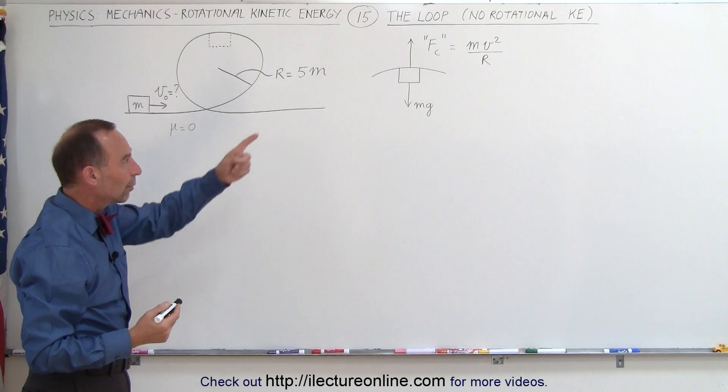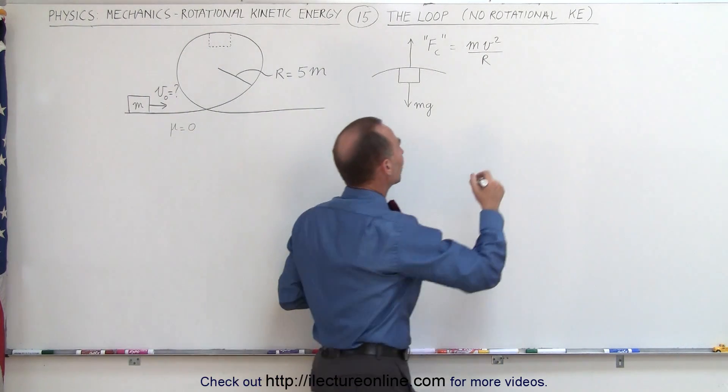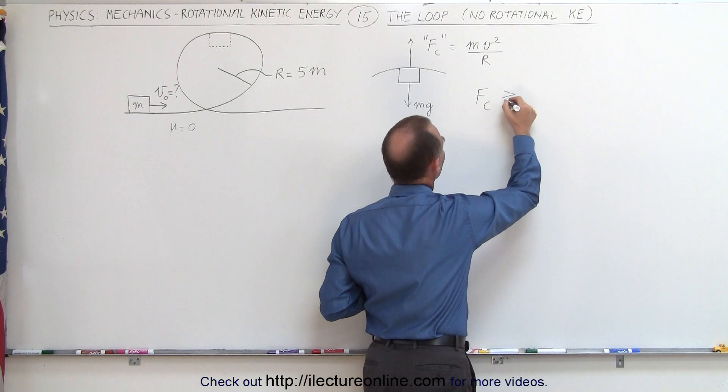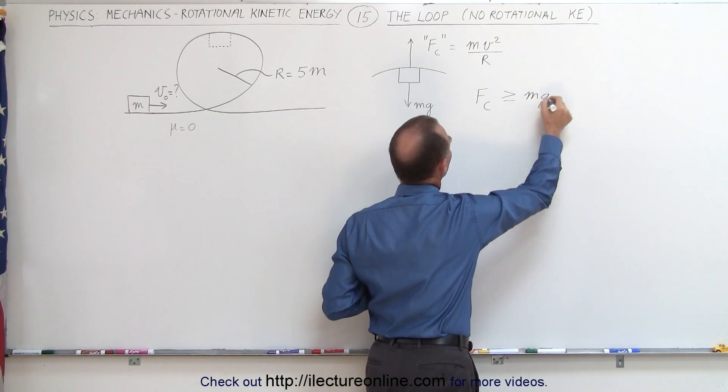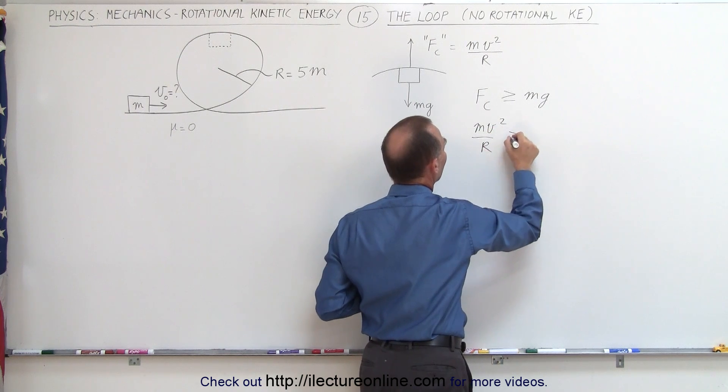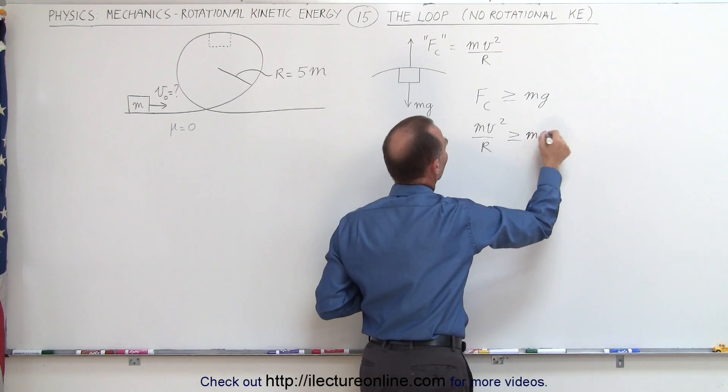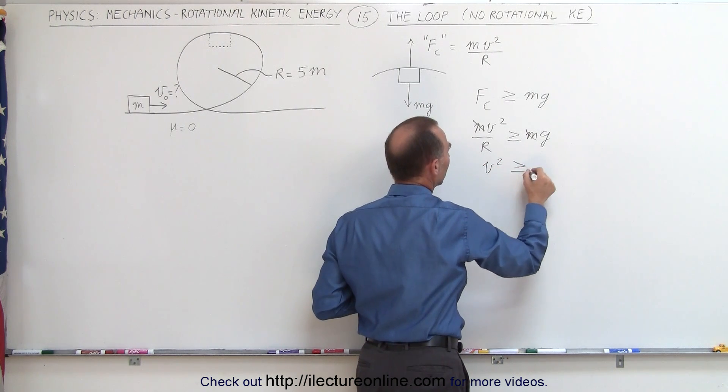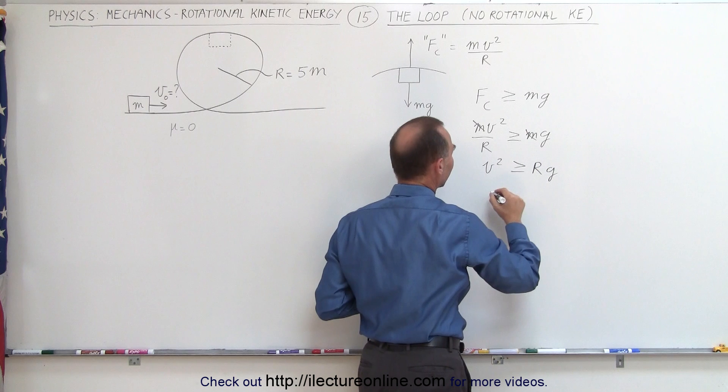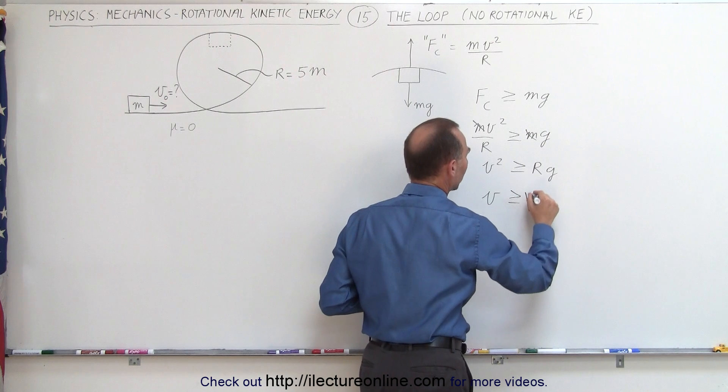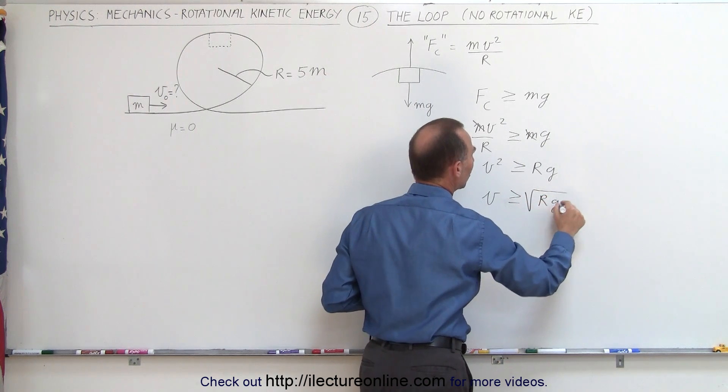So what that means is the centrifugal force must be greater than or equal to the weight of the object. In other words, the mv squared over r must be greater than or equal to mg. First of all we can cancel out the m's, and then we can write that v squared must be greater than or equal to r times g, or finally that the velocity should be greater than or equal to the square root of r times g.